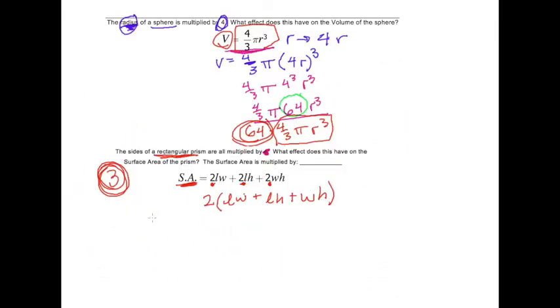So let's see what's going to happen if I multiply all these measurements by 3. So now I have to do 2, parenthesis, 3L, multiply by 3, 3W, multiply. And then plus 3L times 3H plus 3W times 3H.